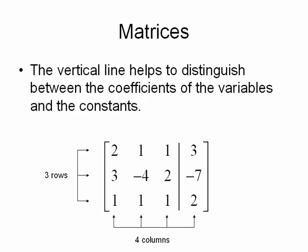The vertical line that you see here helps to distinguish between the coefficients of the variables and the constants. Essentially, it's just an equal sign. So that very first row that says 2, 1, 1, 3 means that 2x plus y plus z equals 3.